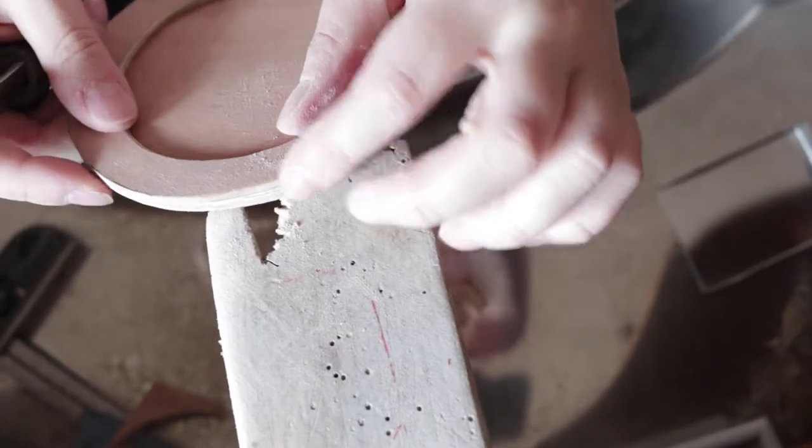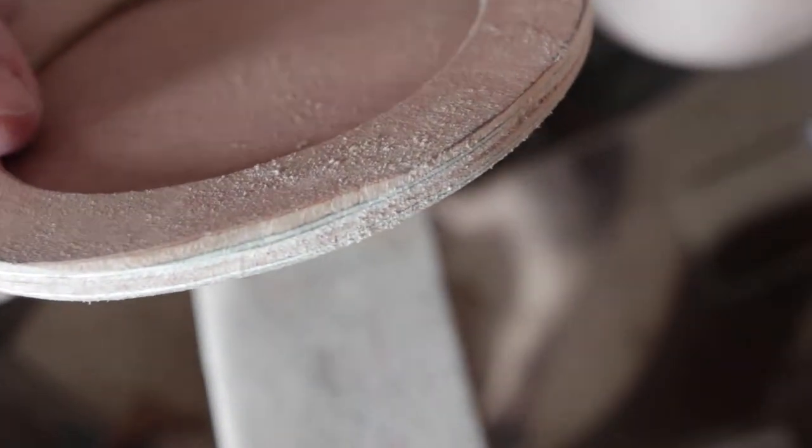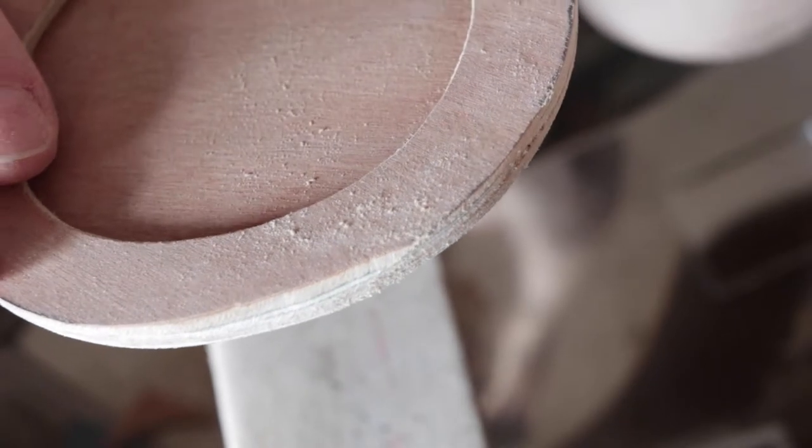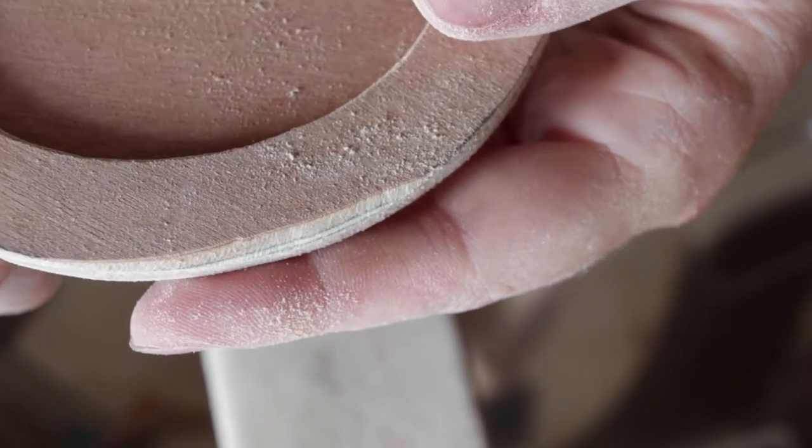So here I'm determining the angle more or less. I can use the lines in the plywood as a guide, as you see the different layers, and I can say a couple of millimeters until the darker line or whatever. And you can just try and see what's comfortable for you.